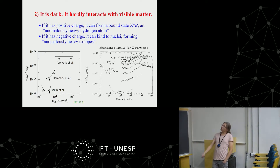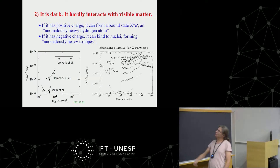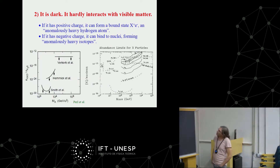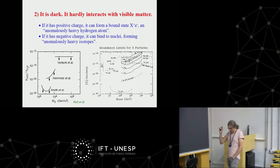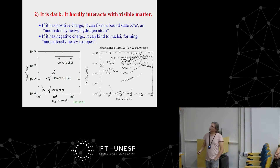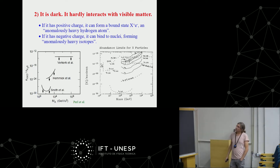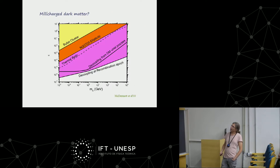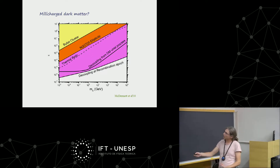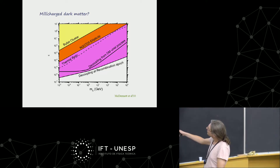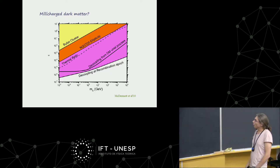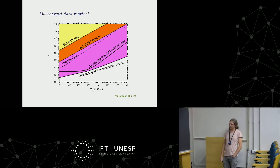If the dark matter particle has negative charge, it would bind to nuclei like a very heavy electron, constituting anomalously heavy isotopes. Different authors searched for isotopes chemically similar to carbon-14, oxygen-16, etc., but much heavier, and found none — excluding negatively charged dark matter. In recent years there has been renewed interest in millicharged dark matter particles; for masses from 10^-3 GeV to 10^4 GeV, the maximally allowed millicharge is between 10^-6 and 10^-3 depending on the mass, so a millicharge of 10^-10 is perfectly allowed.